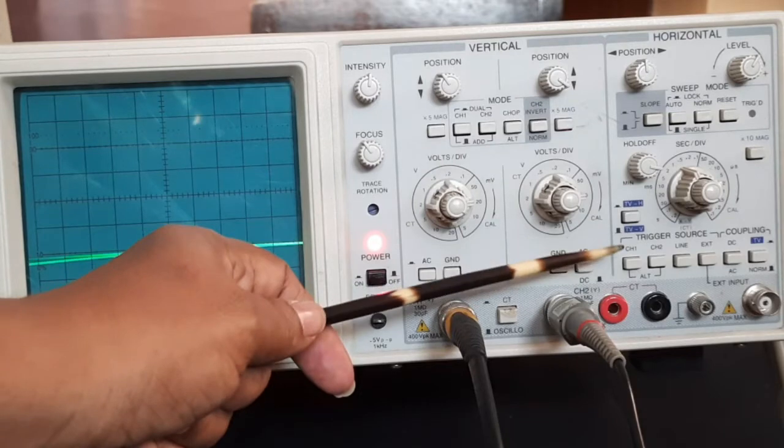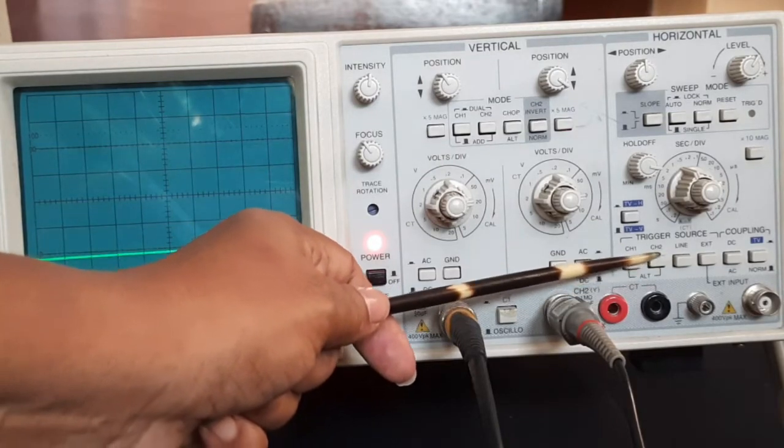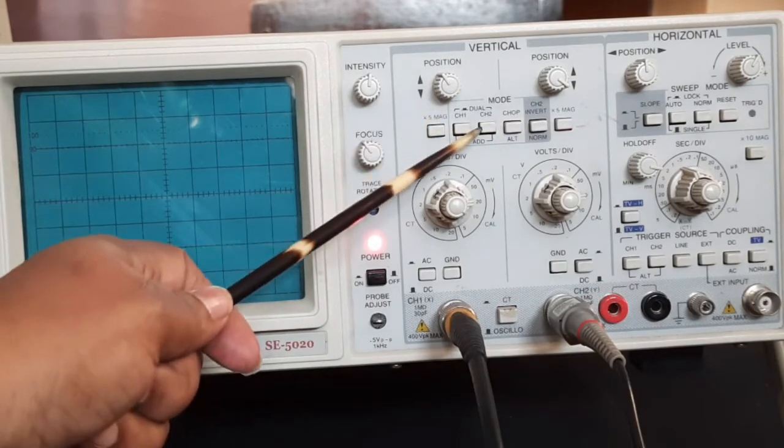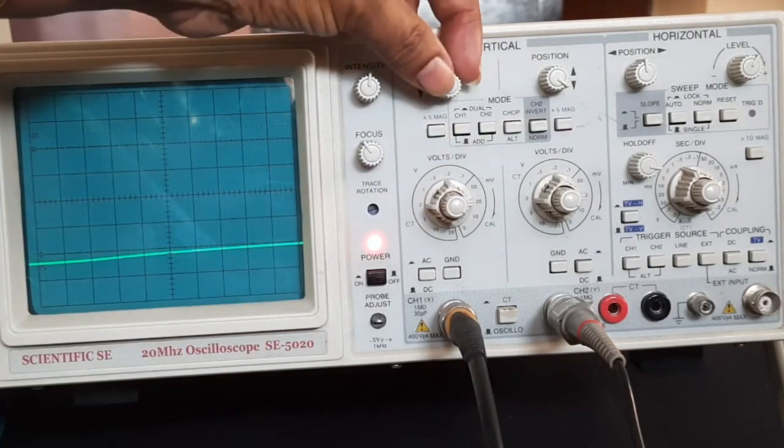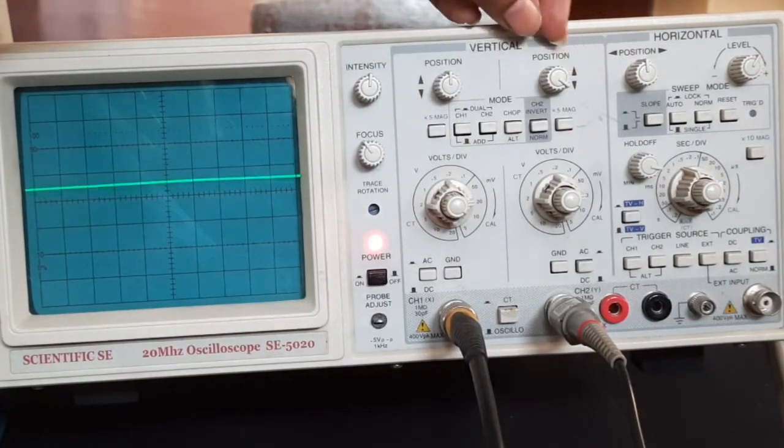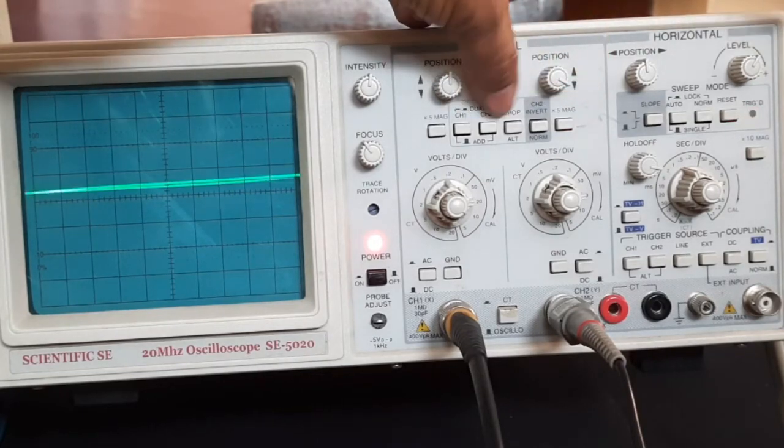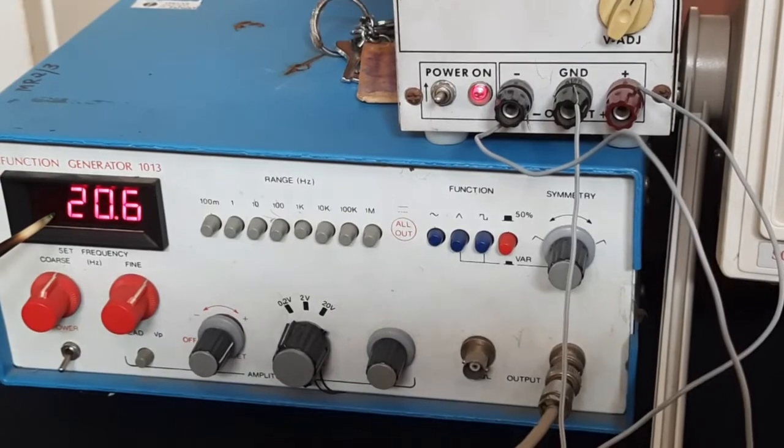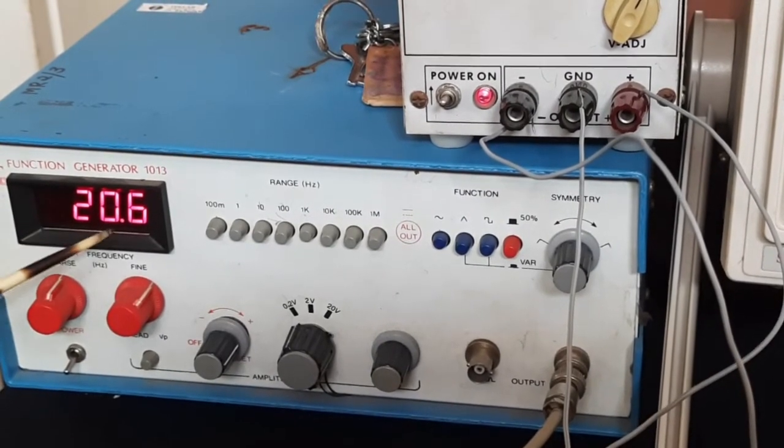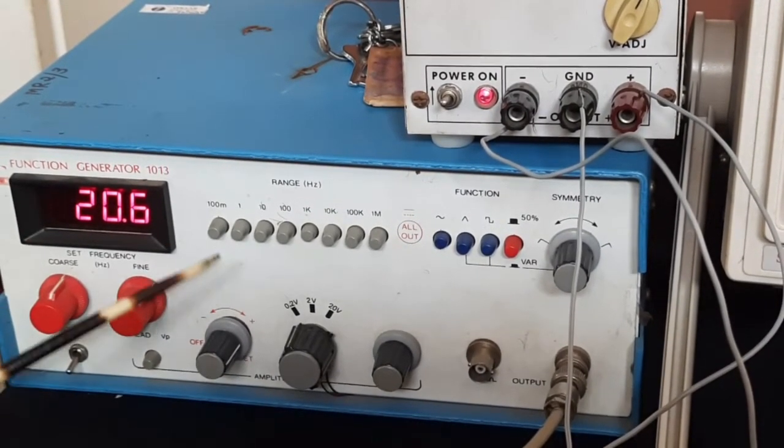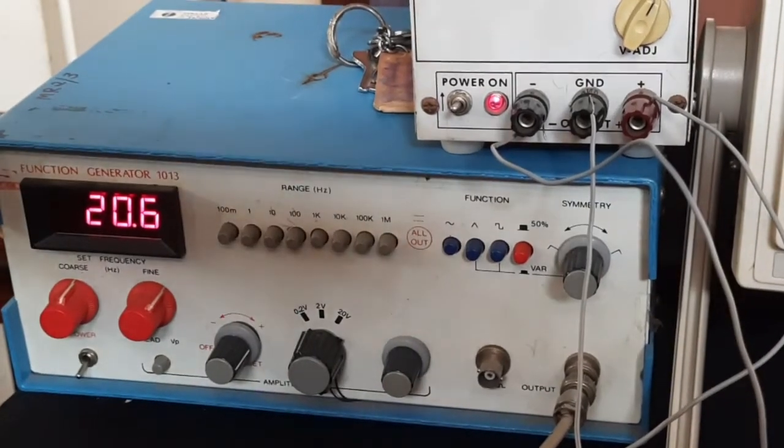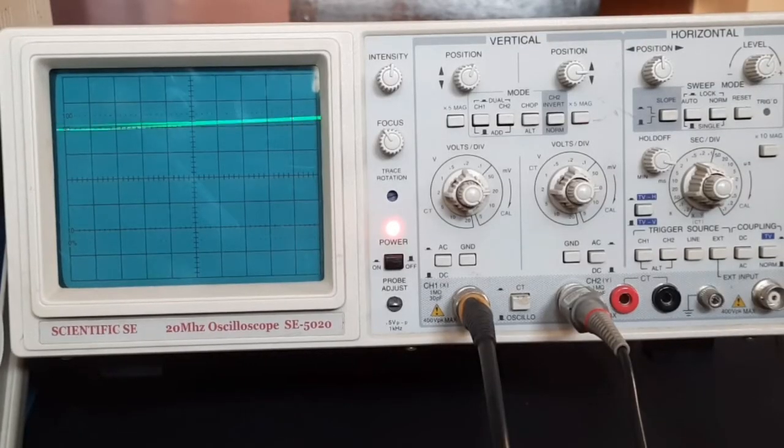We are using both channels, channel 1 and channel 2. Press both channel 1 and channel 2. We will give an input voltage of 20 millivolt or 40 millivolt peak to peak with this knob in 0.2 volt. We will observe the CRO.